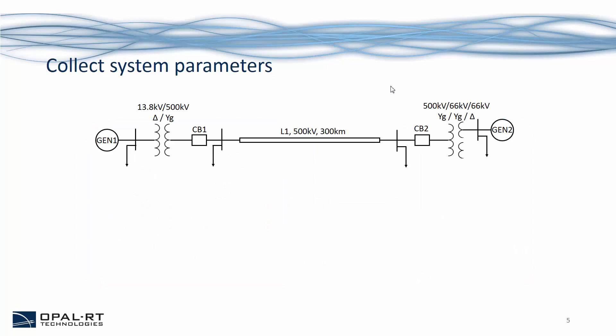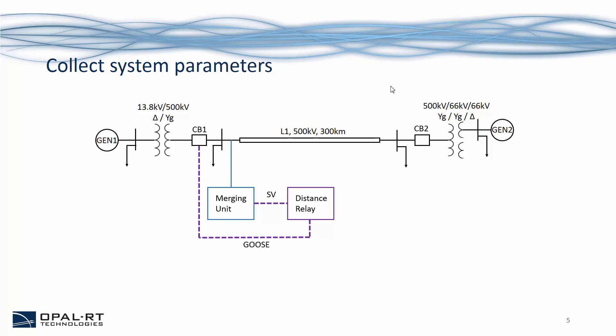For example, if we are considering a double-circuit 500 kV transmission line which is 300 kilometers, we are simulating a virtual merging unit in the model to send out the voltage and current measurements from the bus to a distance relay. These measurements are sent in the format of sample values, and the distance relay is configured to protect the first 80% of the line. In case of detecting a fault in the zone, it will send out a GOOSE message as a trip signal to operate the circuit breaker modeled in the system.